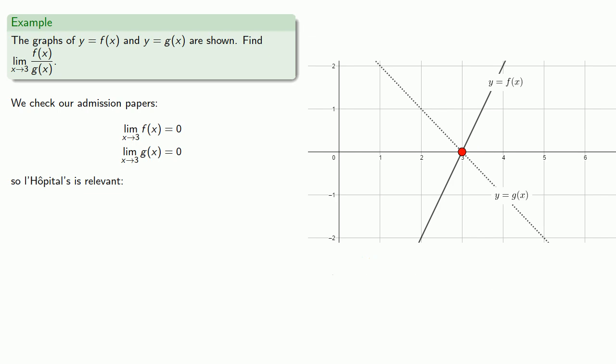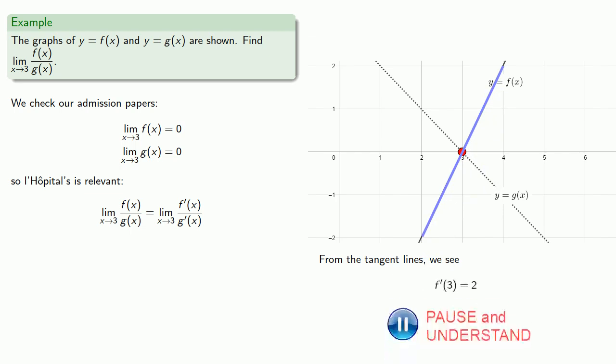The limit of the quotient of the functions is the limit of the quotient of the derivatives, provided that everything exists. Remember, the derivative is the slope of the line tangent to the graph, so we take a look at our tangent lines. From the line tangent to the graph of y equals f of x at x equals 3 — in other words, f prime of 3 — we see the slope is equal to 2.